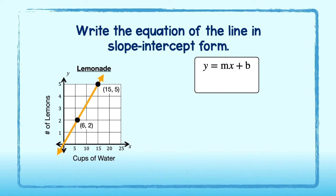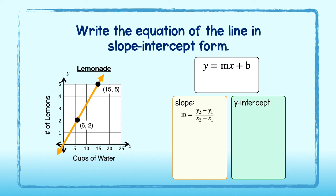Okay, in order to write the equation of a line in slope-intercept form, we must identify the slope and the y-intercept. Slope is equal to y2 minus y1 over x2 minus x1. We can take this information from our points, plug them in and simplify to see that the slope is 1 third.